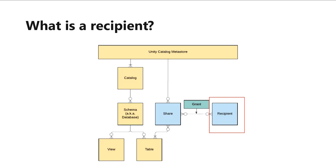If you remove a share from your catalog metastore, recipients of that share lose their ability to access it. Now let's move to the recipient. The recipient is an object that associates an organization with a credential or a secure sharing identifier that allows the organization to access one or more shares. As a data provider, you can define multiple recipients for any given Unity Catalog metastore. But if you want to share data from multiple metastores with a particular user or group, you must define the recipient separately for each metastore. A recipient can have access to multiple shares. If you delete a recipient from your Unity Catalog metastore, that recipient loses access to all shares it could previously access.